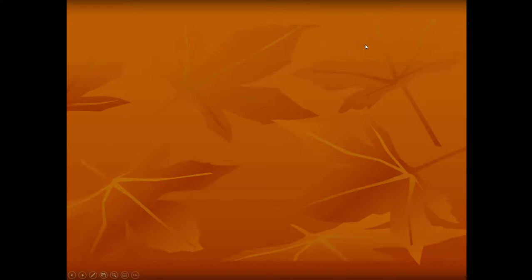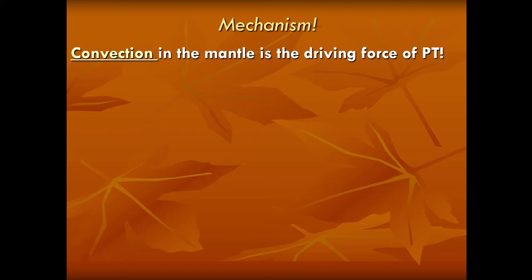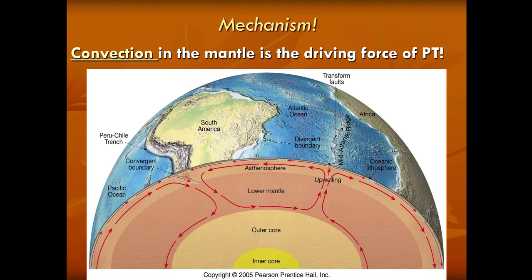Wegener's fatal flaw was that he couldn't come up with a mechanism — but there was one. The driving force behind plate tectonics is convection in the mantle. The core of the earth is really hot, and hot material tends to rise. Then it cools off, becomes denser, and sinks. Where we have upwelling of material in the mantle, we have spreading of the crust and divergent plate boundaries — mostly in the ocean. Where material cools off, becomes denser, and sinks, that's where we have convergent boundaries.